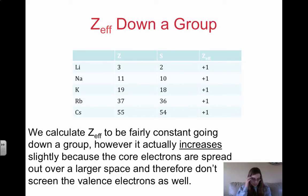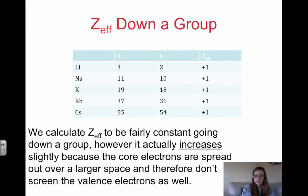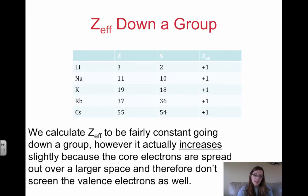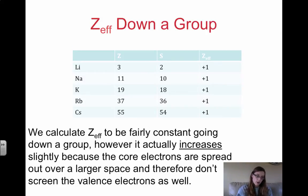As we go down a group, the effective nuclear charge is fairly constant, but it actually increases slightly because the core electrons are spread out over a larger space. Therefore they don't screen the valence electrons as well. A large nuclear charge makes it harder for the electron core to shield the outermost electrons, so Z-effective slightly increases as you go down a group.